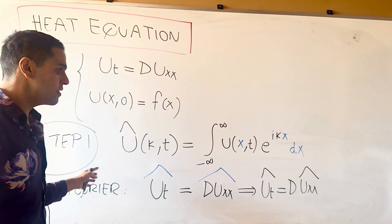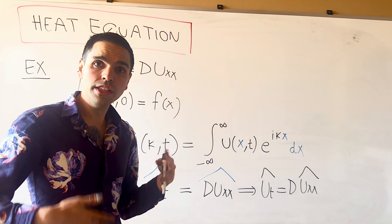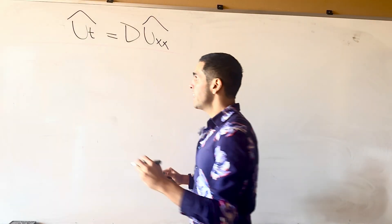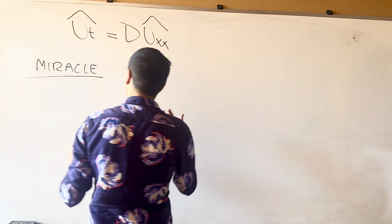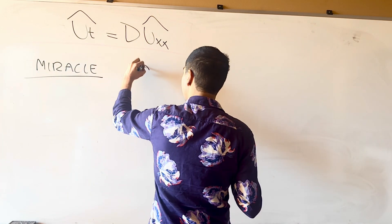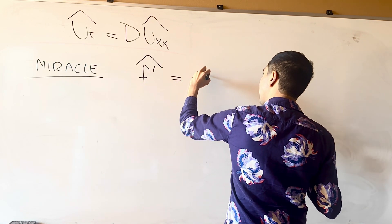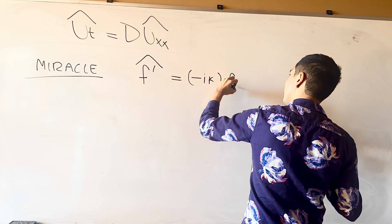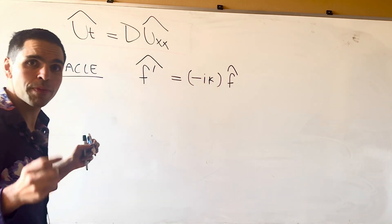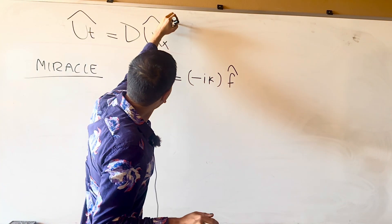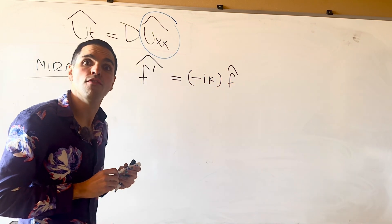The next step is to solve for û, and for this we need to use our miracle once again. Recall our miracle: the Fourier transform turns differentiation into multiplication, so f̂' = -iκ·f̂. Because we're using the Fourier transform with respect to x, we can use the miracle on the right-hand side since it's a derivative with respect to x.